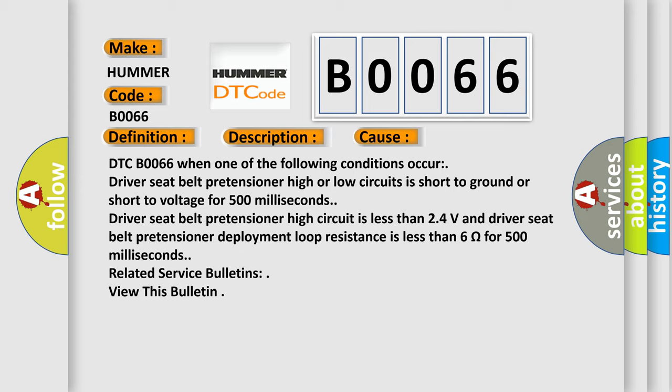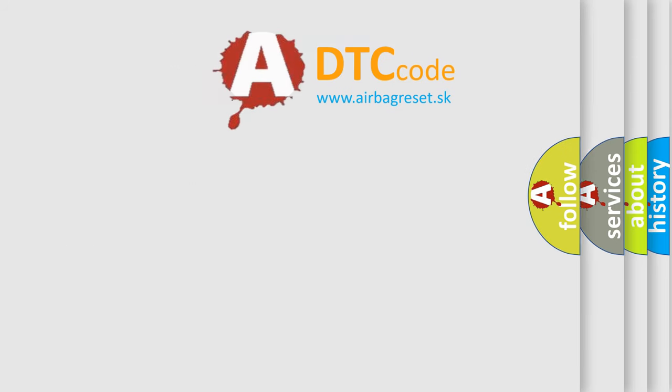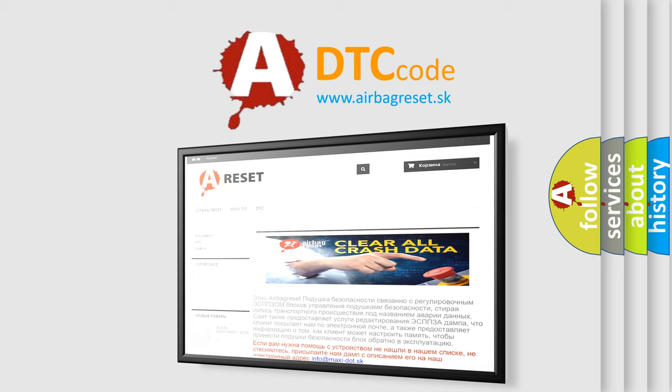The driver seat belt pretensioner high circuit is less than 2.4 volts and the driver seat belt pretensioner deployment loop resistance is less than 6 ohms for 500 milliseconds. Related service bulletins are available for this fault. The airbag reset website aims to provide information in 52 languages. Thank you for your attention and stay tuned for the next video.